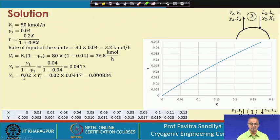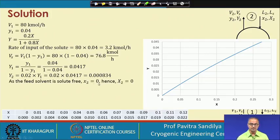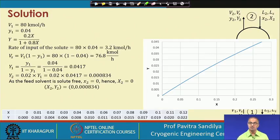20 percent of this value comes out from the column. Since the solvent is assumed fresh without any cyclohexane, x2 is equal to 0, and therefore the mole ratio X2 is also 0.